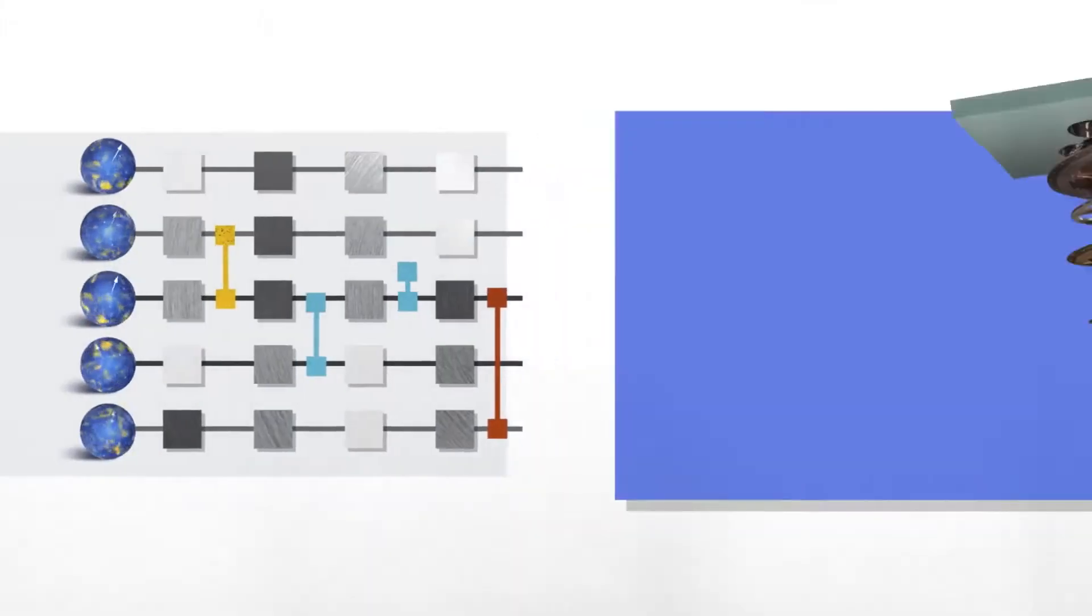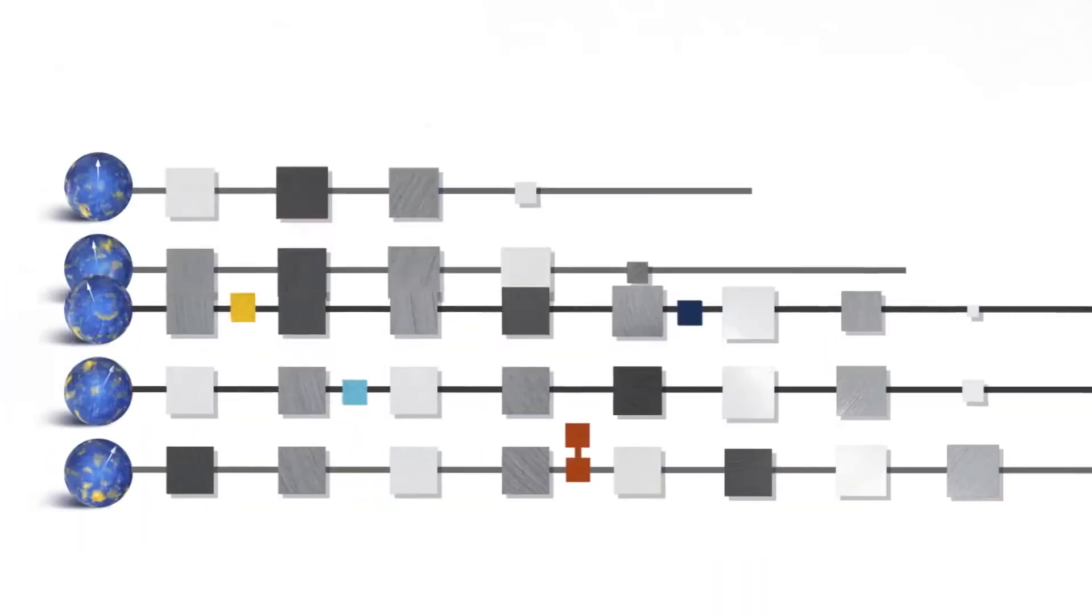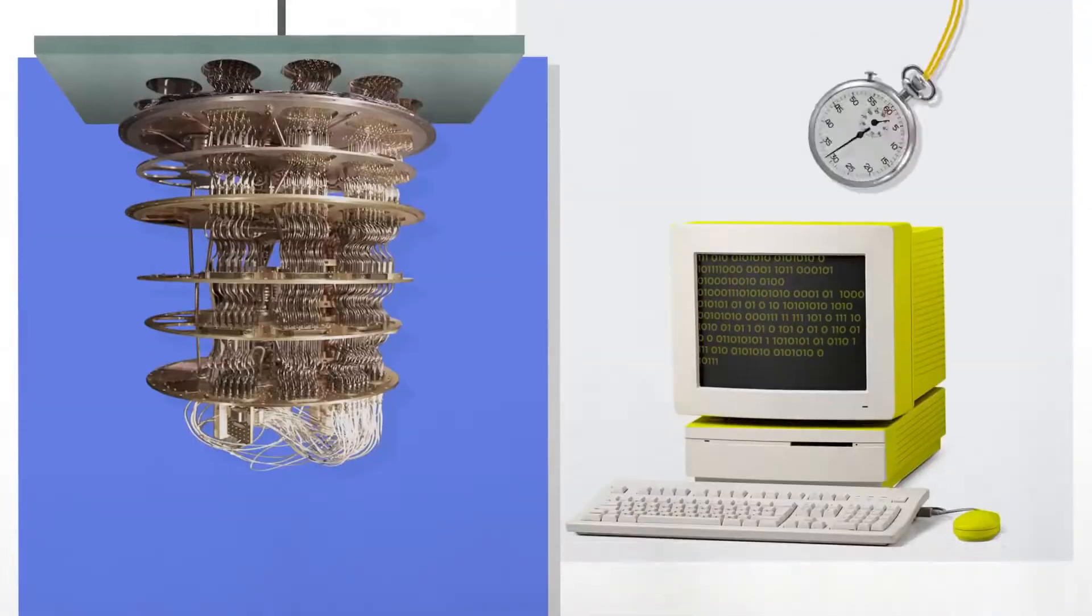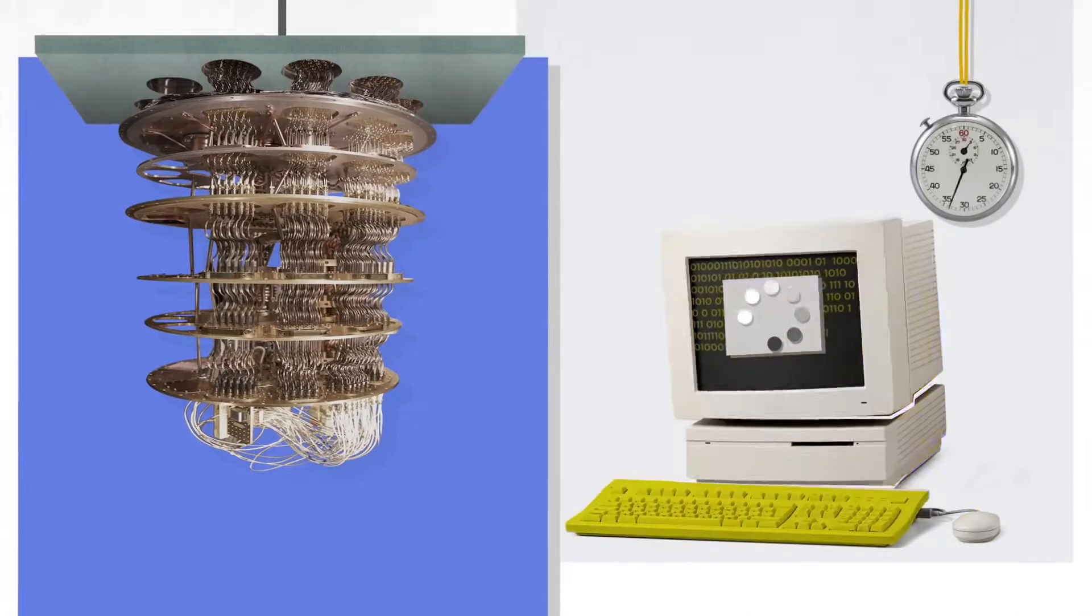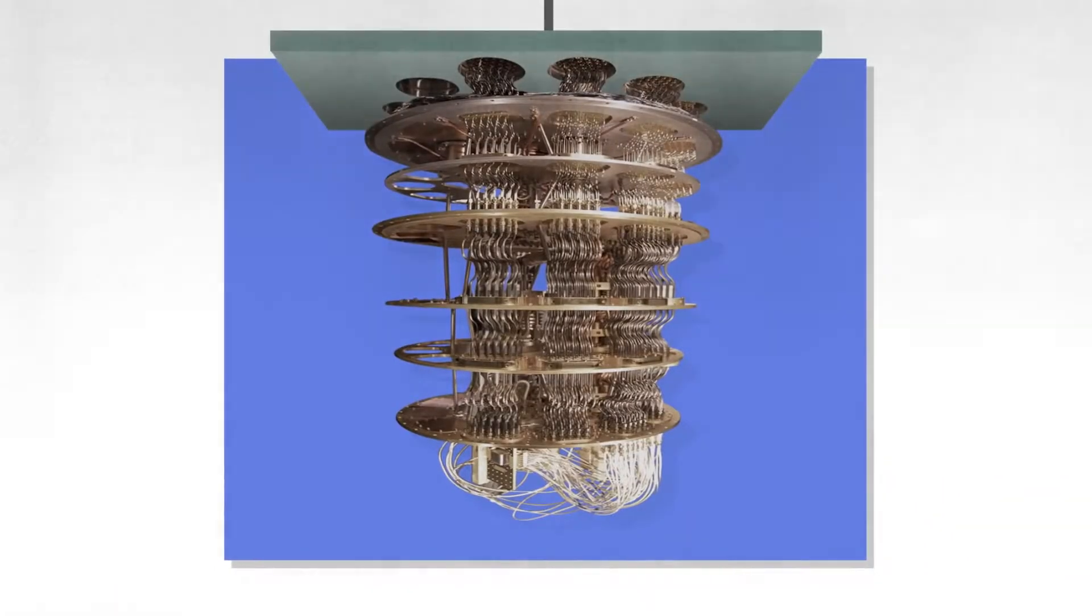To actually demonstrate quantum supremacy we have these three steps. First, pick a circuit. Second, run it on the quantum computer. Third, simulate what the quantum computer is doing on a classical computer. We gradually increase the complexity of that circuit. At some point it becomes completely impossible for the classical computer to keep up. Then we say we've achieved quantum supremacy.